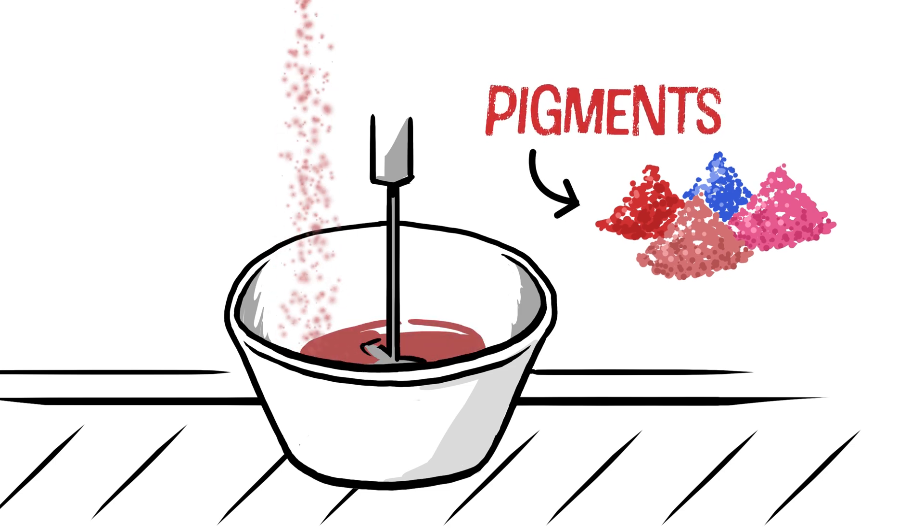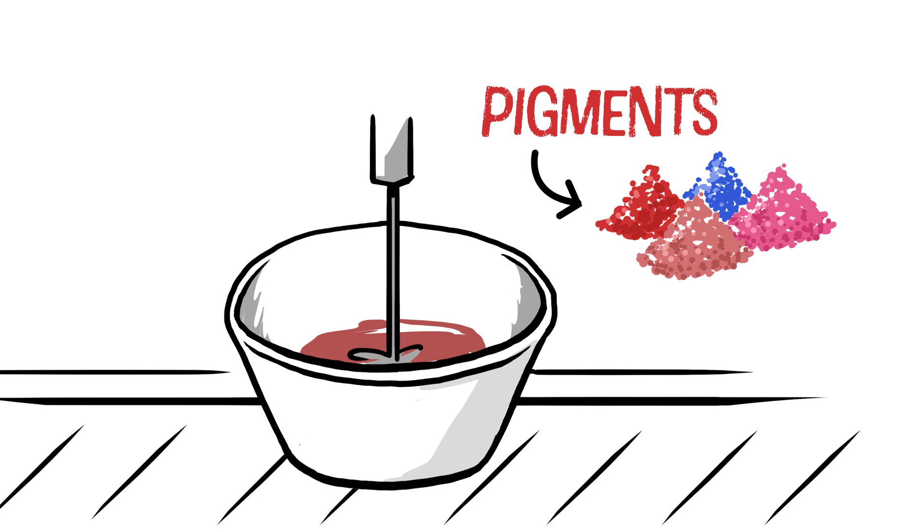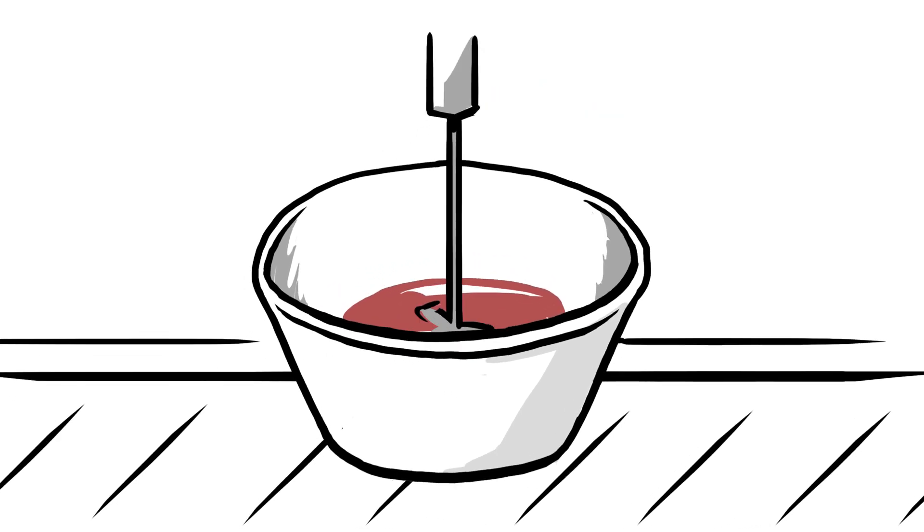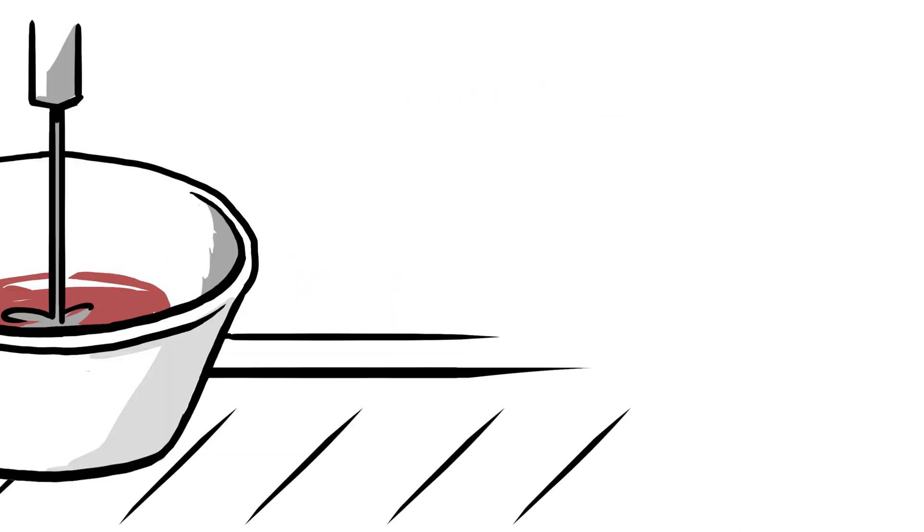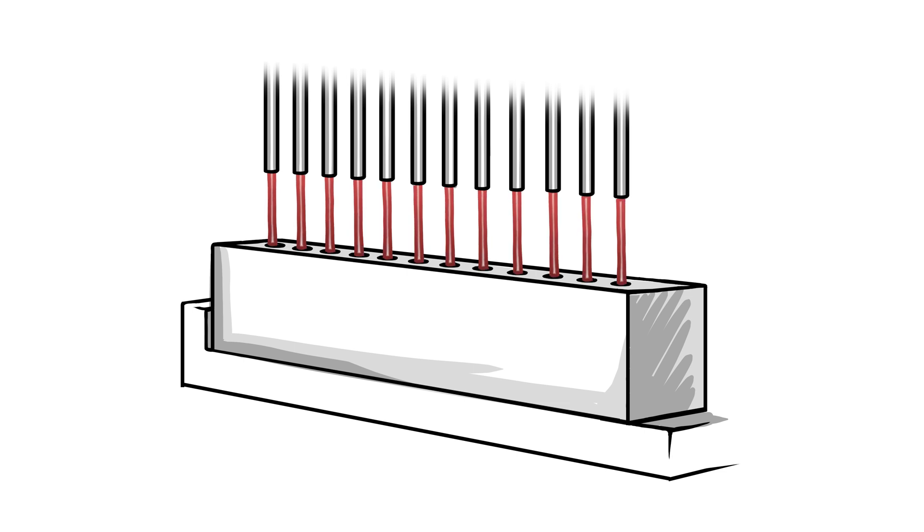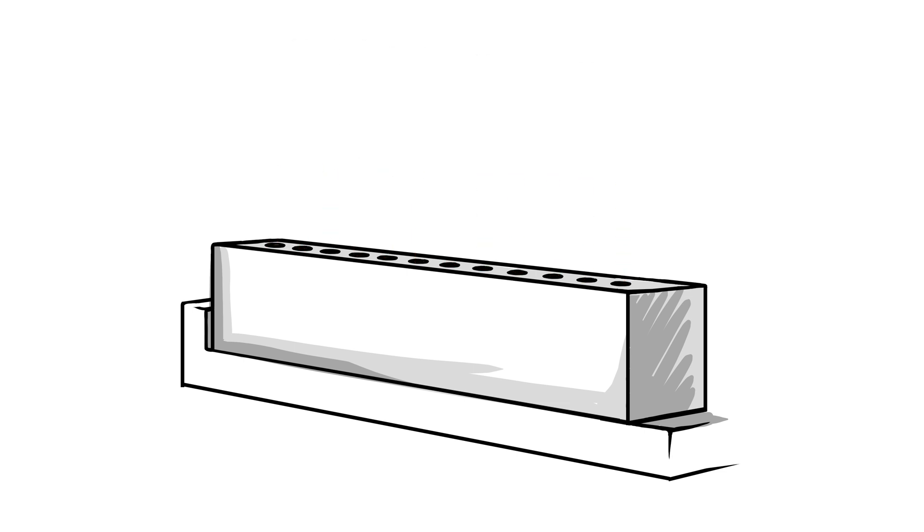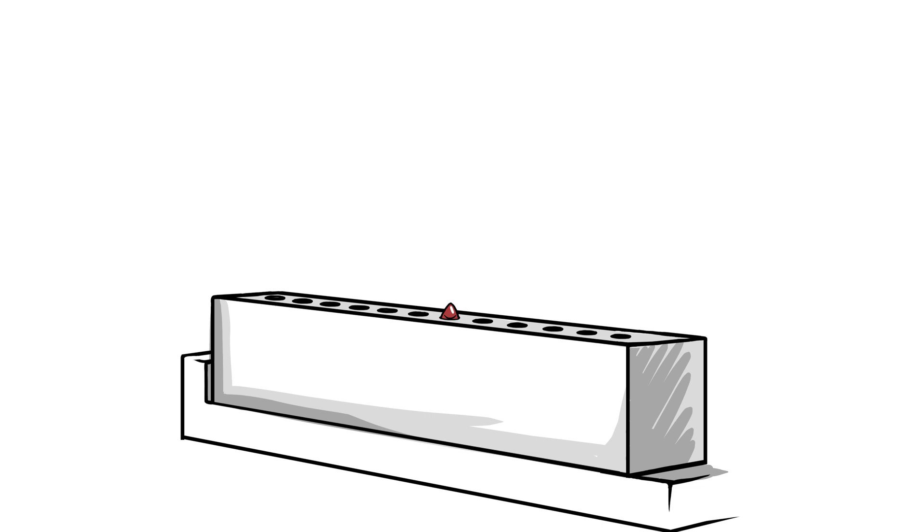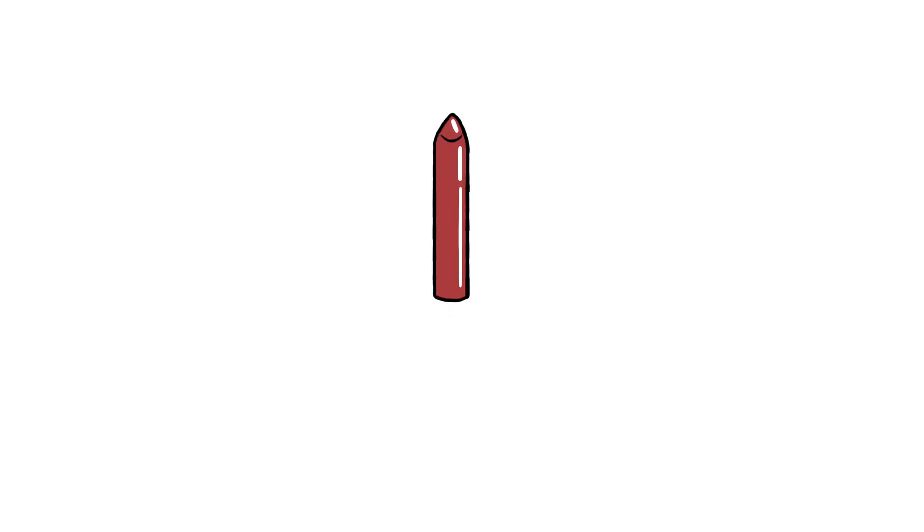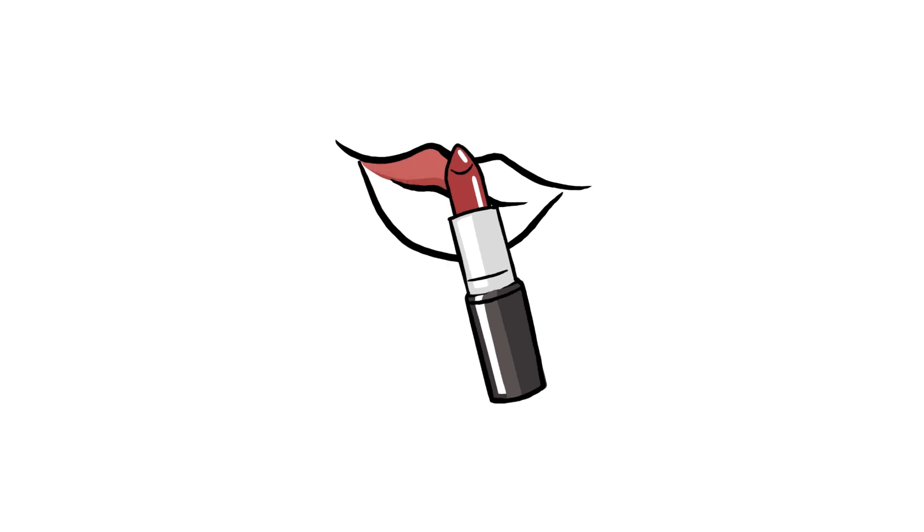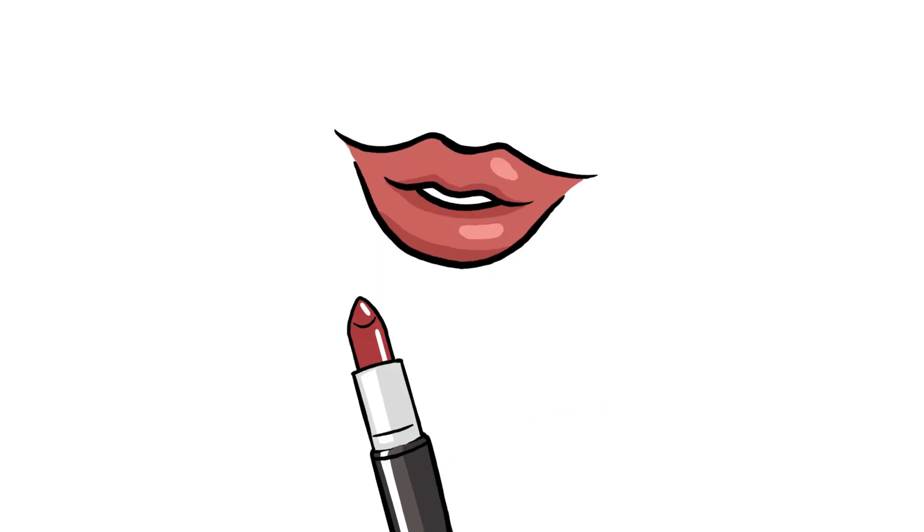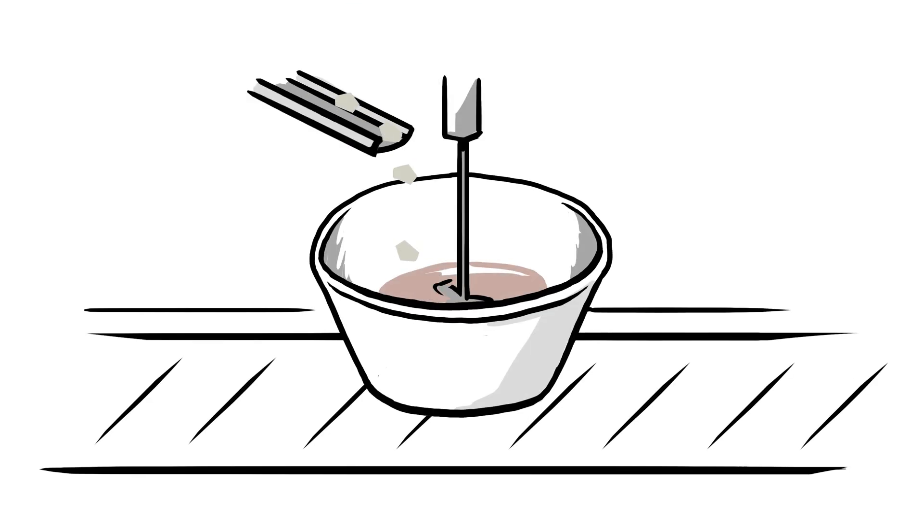Once it's all melted and blended into a smooth, colorful liquid, they pour it into lipstick molds, let it cool down until it's solid, and ta-da! They pop it out, twist it into those little tubes, and boom! It's ready to go on your lips. Yep, every tube of lipstick starts out like melted rainbow goo in a science-y kitchen. Kinda cool, right?